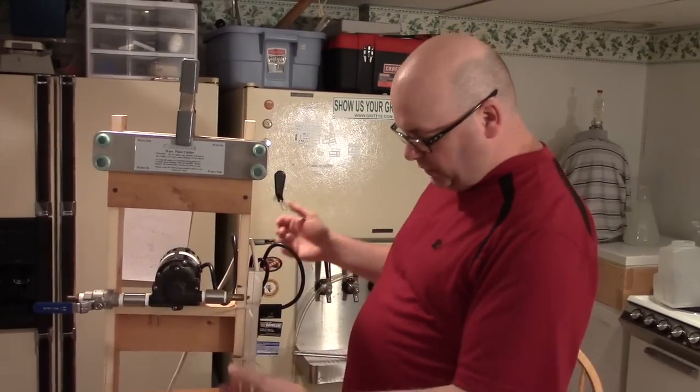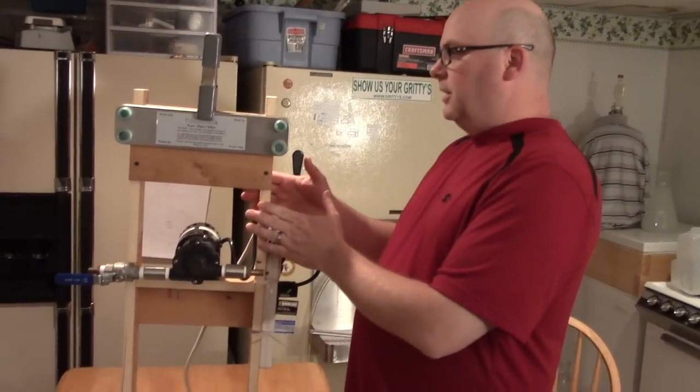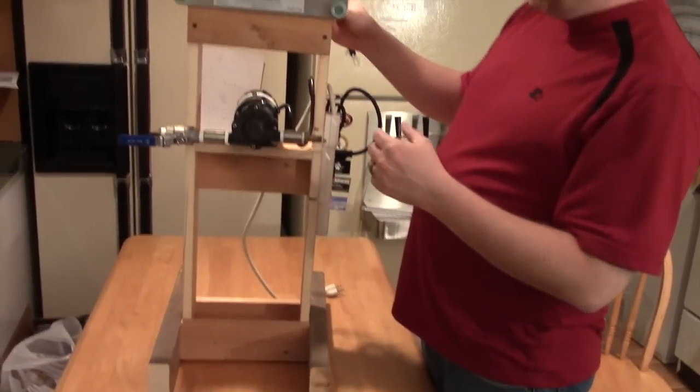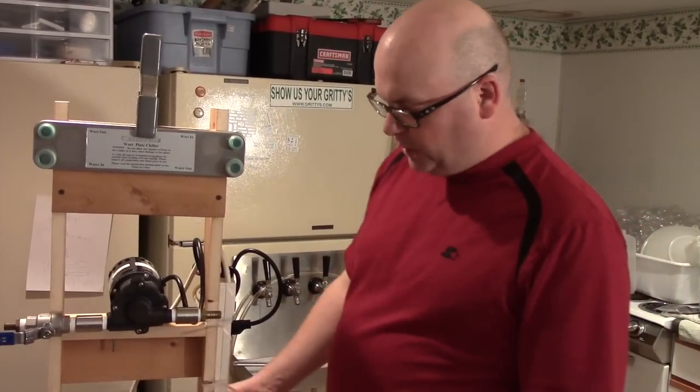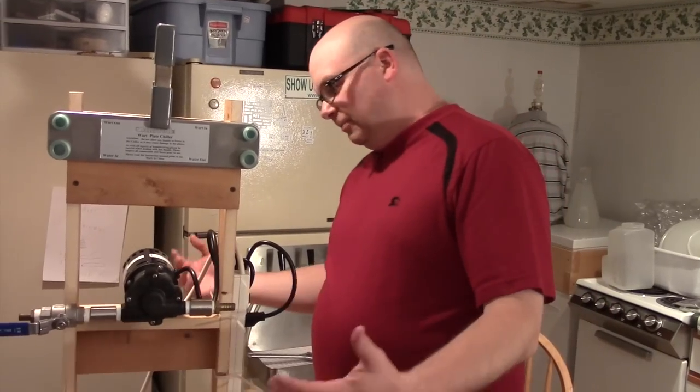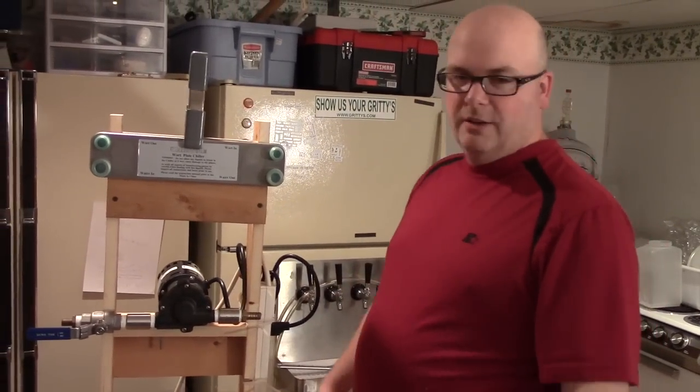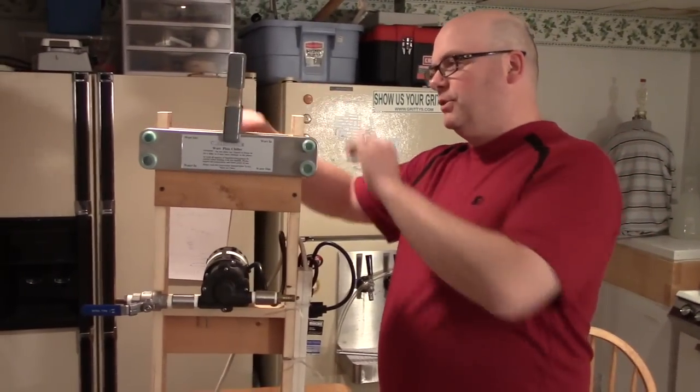So anyway, it's just simple 2x4s, some stock 1x stuff and some strapping and drywall screws holding it all together. A little bit of glue here and there. But we'll see what it looks like when I get brewing with it. I might put a handle on it up here so I can pick it up.